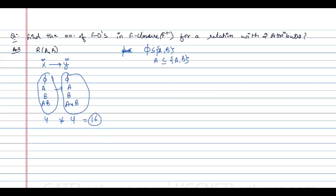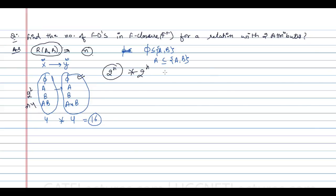The general formula is: if a relation R has n attributes, then the power set of R contains 2^n subsets. Since both X and Y can be any subset, the total number of possible functional dependencies is 2^n × 2^n = 2^(2n). For a 2-attribute relation, that gives 2^4 = 16 possible functional dependencies.